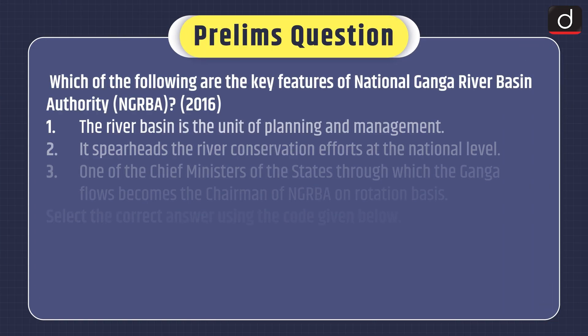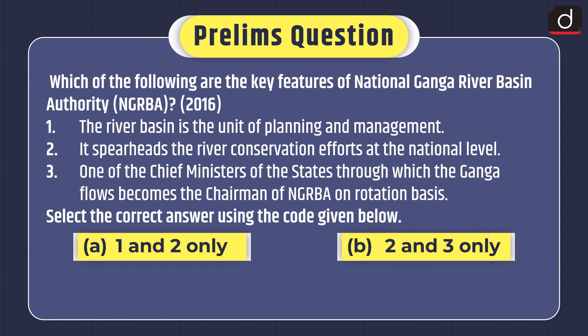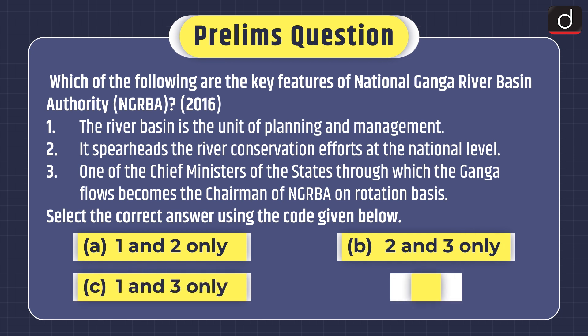Now it's time for practice questions. Moving on to the Prelims question that was asked in the 2016 exam: Which of the following are the key features of the National Ganga River Basin Authority? 1. The river basin is the unit of planning and management. 2. It spearheads river conservation efforts at the national level. 3. One of the Chief Ministers of the states through which the Ganga flows becomes the chairman of NGRBA on a rotation basis.